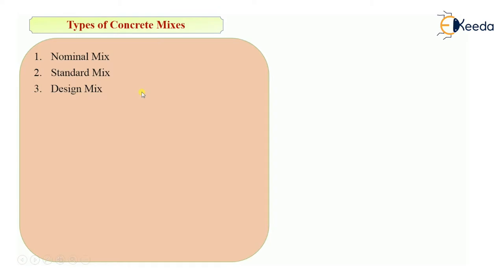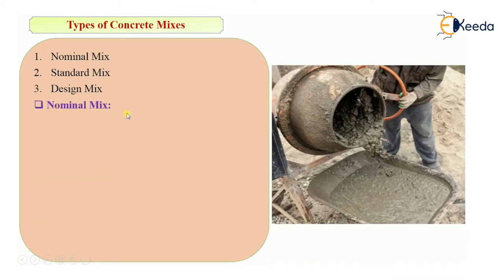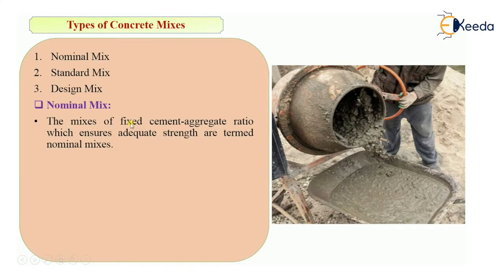The first type of mix is nominal mix. The mixes of fixed cement-to-aggregate ratios which ensure adequate strength are termed as nominal mixes. If the concrete gives adequate strength at a fixed ratio of cement to aggregates — that is, cement to sand to coarse aggregate — that mix will be known as a nominal mix.